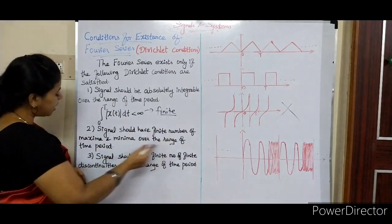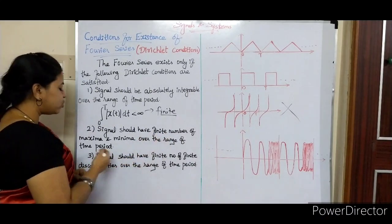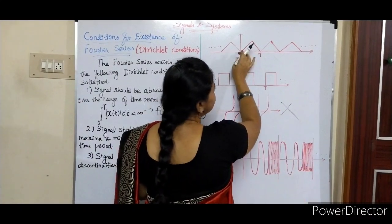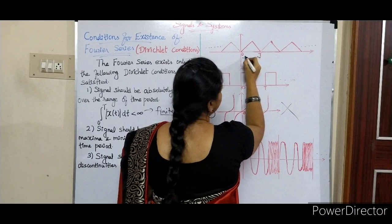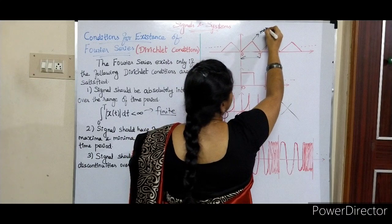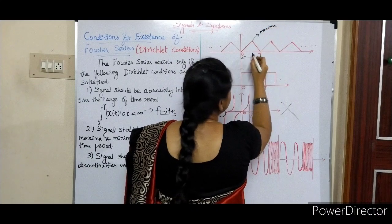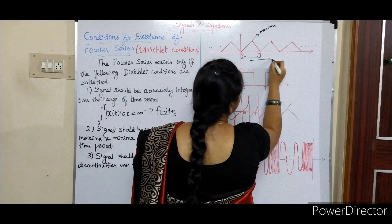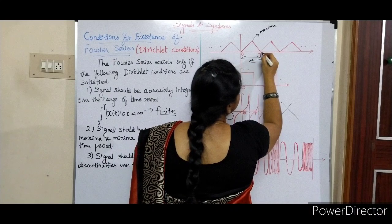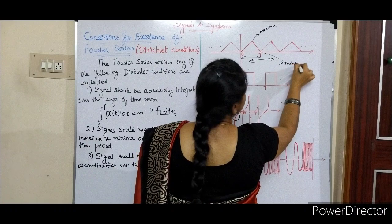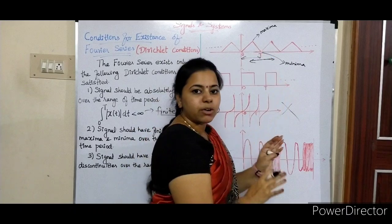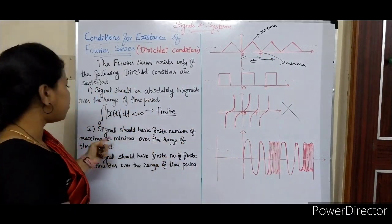Second point: the signal should have a finite number of maxima and minima over the range of one time period. For example, consider a signal over a time period from start to end — one complete cycle. If you look at this signal, you can see one maxima and one minima. That is a finite number of maxima and minima — so this condition is satisfied.